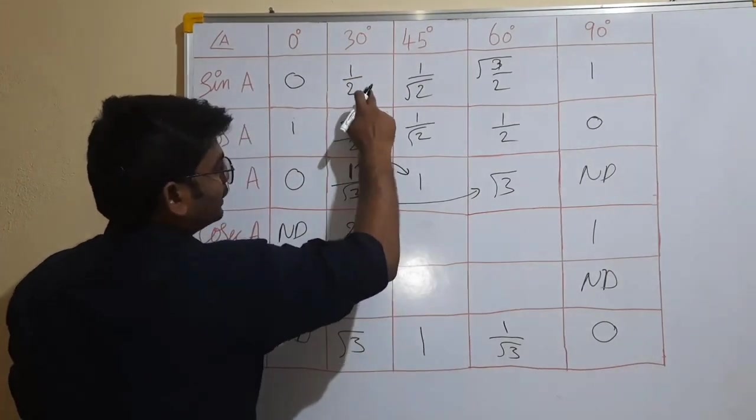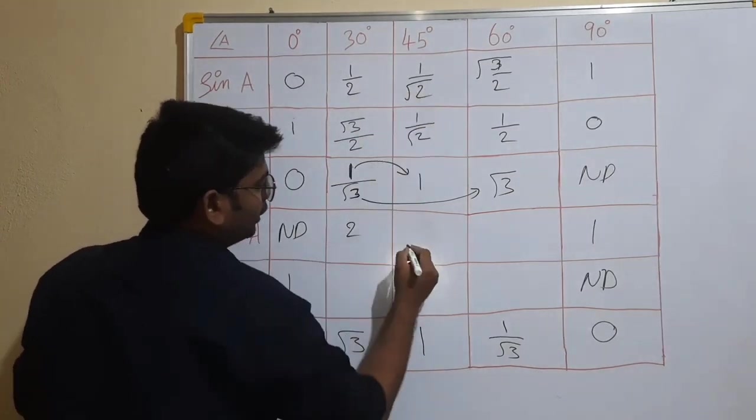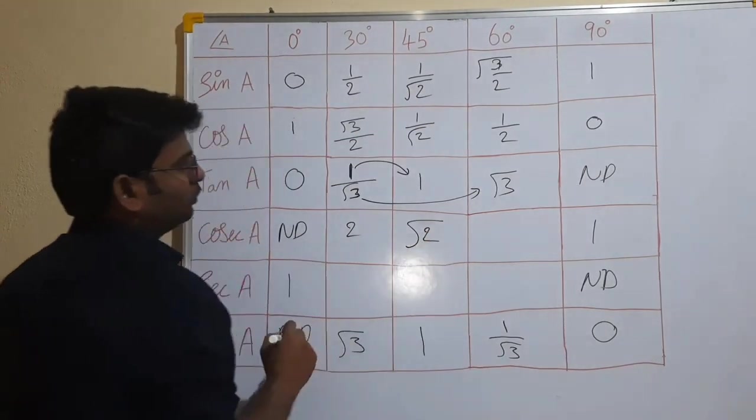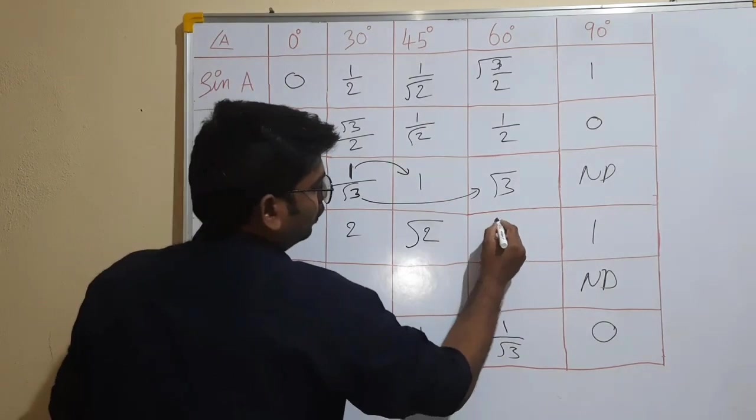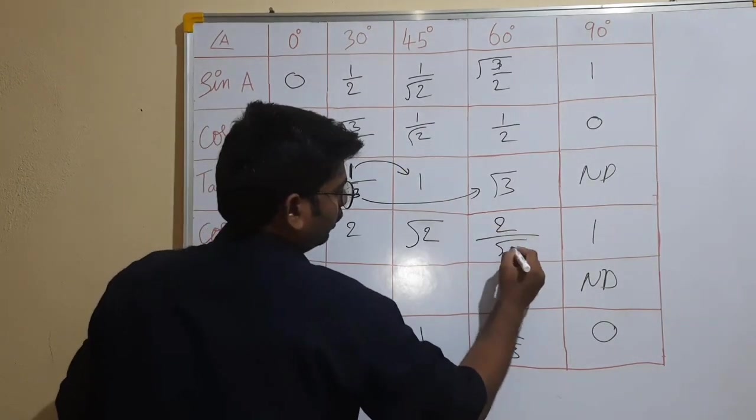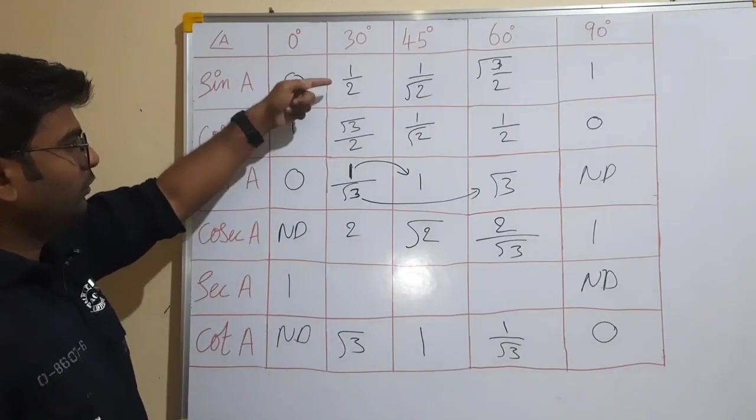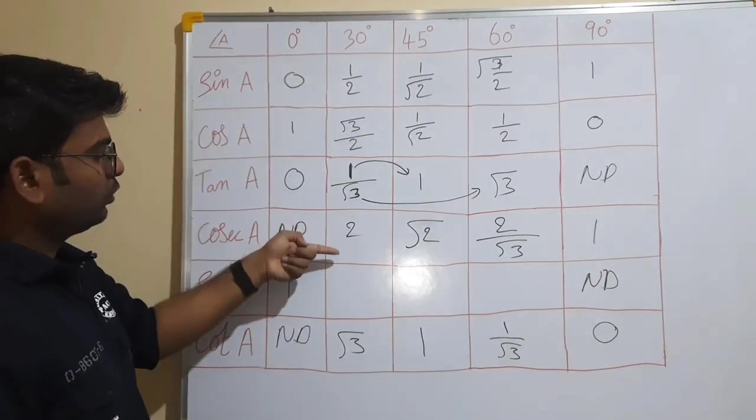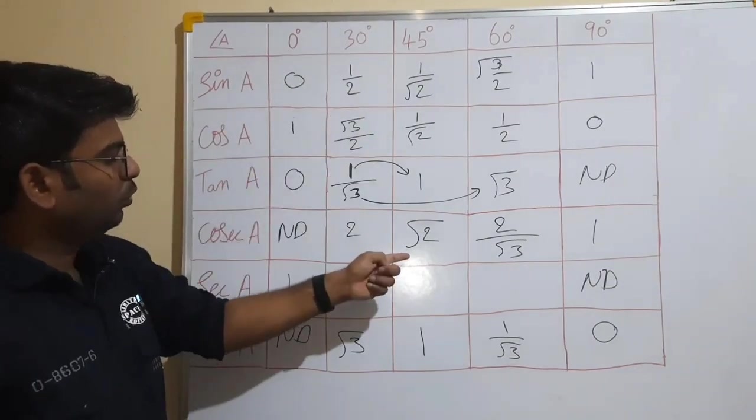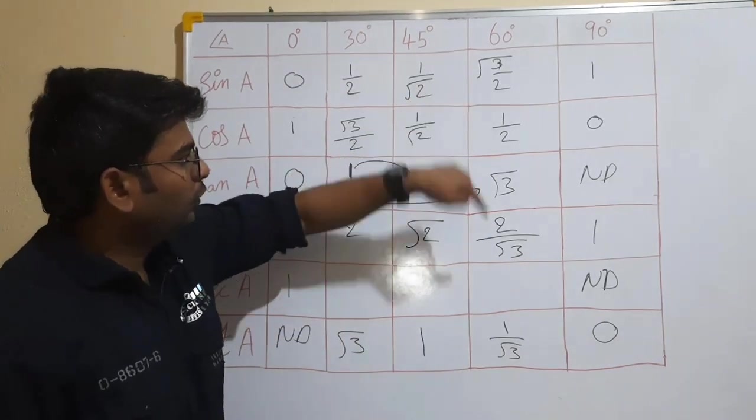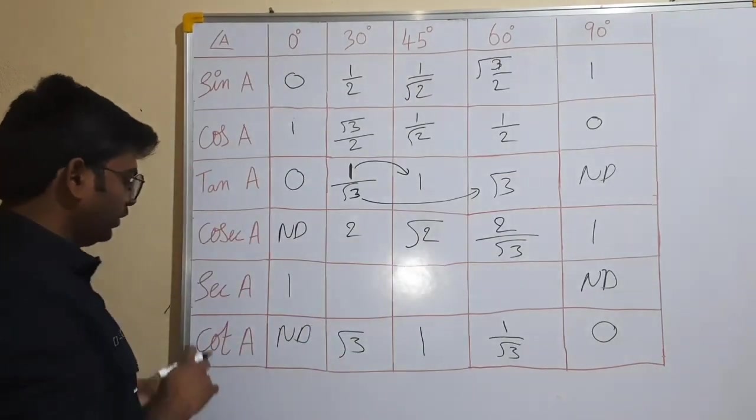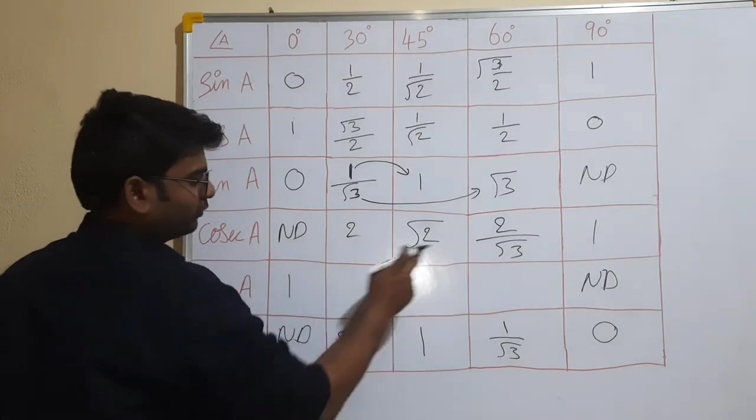2 by 2. The reverse 2. The reverse root 2. The reverse 2 by root 3. So simple, reverse. 1 by 2 reverse 2. The reverse only root 2. The reverse 2 by root 3.